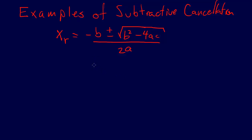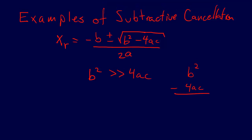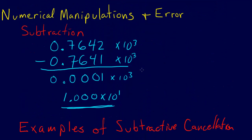Now, if we assume that b squared is much larger than 4ac, then we're going to see that we have this subtractive cancellation going on — we have b squared and we're doing minus 4ac. So we have this exact problem of subtraction.